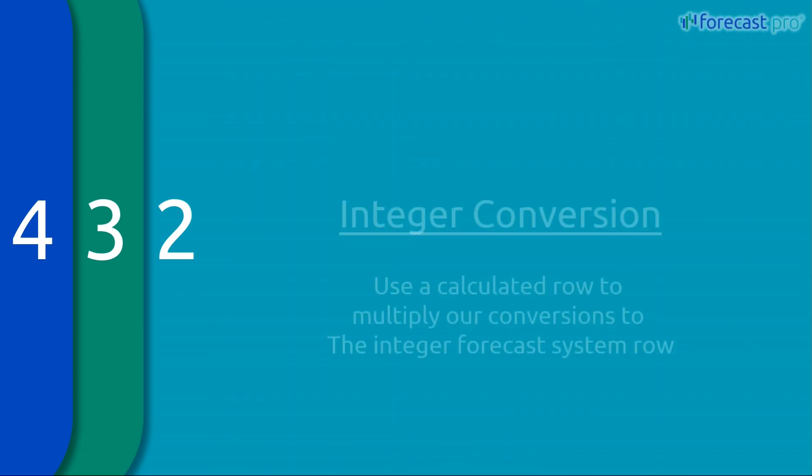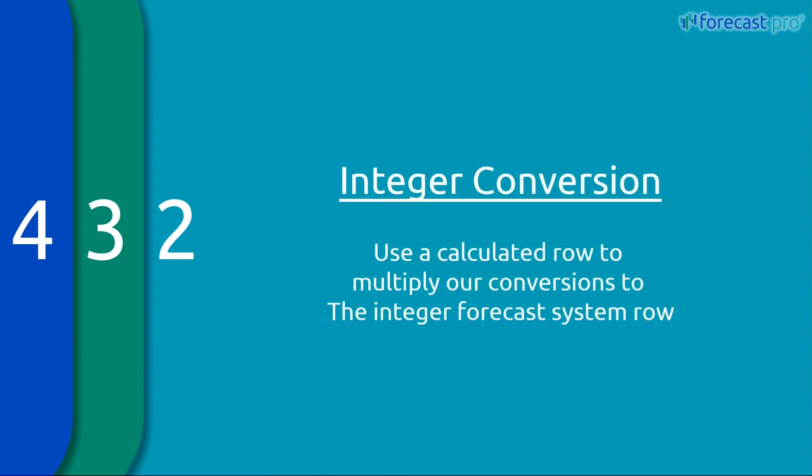In our second example, we're going to look at an integer conversion. Here, we will create our own custom conversion row where we multiply price times our integer forecast to convert the integer forecast into dollars. Let's take a look at this in Forecast Pro.